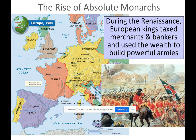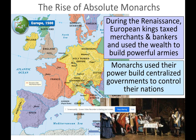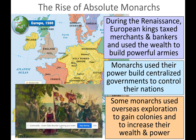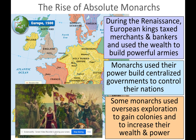During the Renaissance, European kings taxed merchants and bankers and used that wealth to build powerful armies. Monarchs used their power to build centralized governments to control their nations. If a government is centralized, all of the power is in the government — the people don't have power. Some monarchs also used overseas exploration to gain colonies and increase their wealth and power.